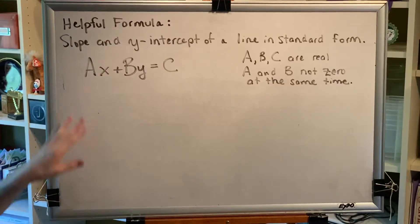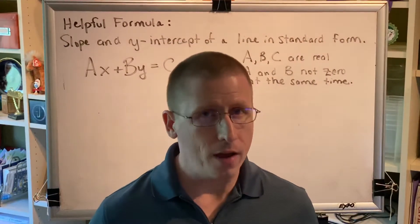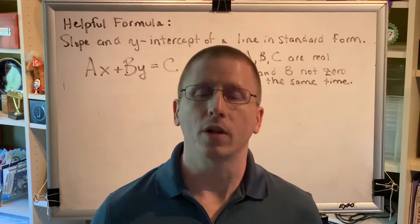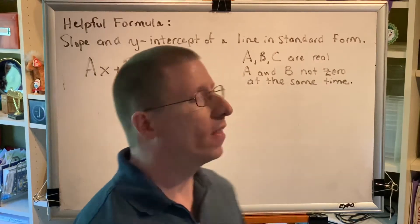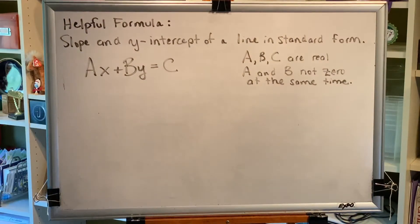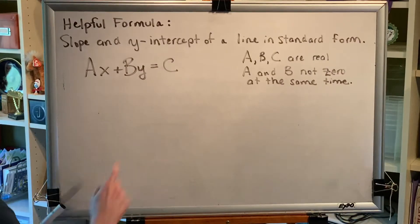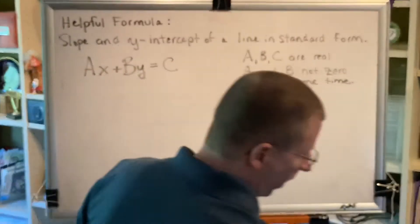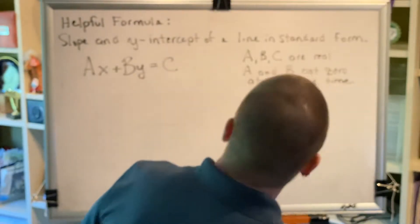We're going to rearrange this equation to put it in slope-intercept form to derive two formulas for the slope and the y-intercept of a line given in standard form. We know that slope-intercept form is y equals mx plus b, so we're going to solve this equation for y.